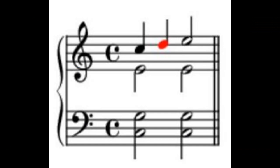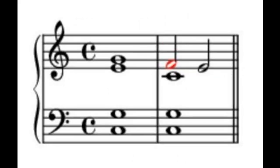Passing notes can either be accented or unaccented. We start out with a chord and move to another chord, and in between lies a passing note which does not form part of the chord. For example, we have a C in the soprano moving to an E — these are part of the C major chord — and the D in between does not form part of these chords; it is a passing note. This particular example is an unaccented passing note because the non-chordal note, the D, falls on the weak second beat of the bar.